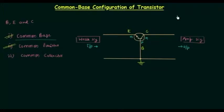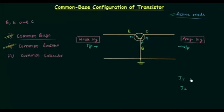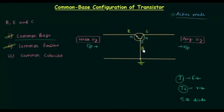This amplification happens only when the transistor operates in active mode. There are two junctions in a transistor: junction J1 and junction J2. In active mode of operation, junction J1 is forward biased and junction J2 is reverse biased. J1 is the junction of diode EB and J2 is the junction of diode BC. We can consider the transistor as two diodes connected back to back, so diode EB is forward biased and diode BC is reverse biased in active mode.